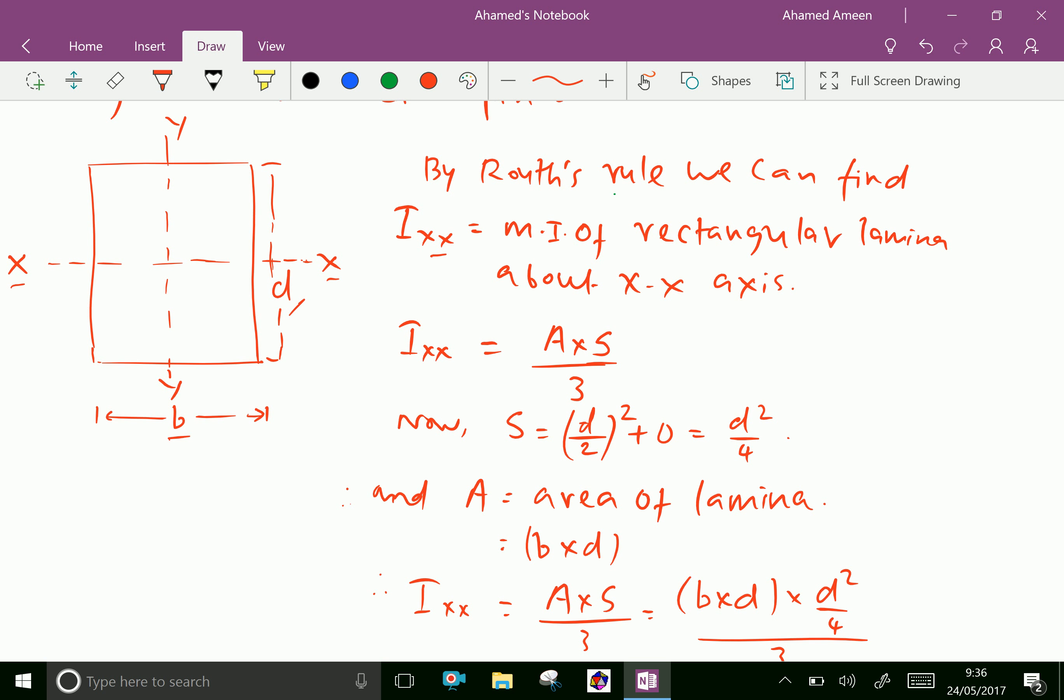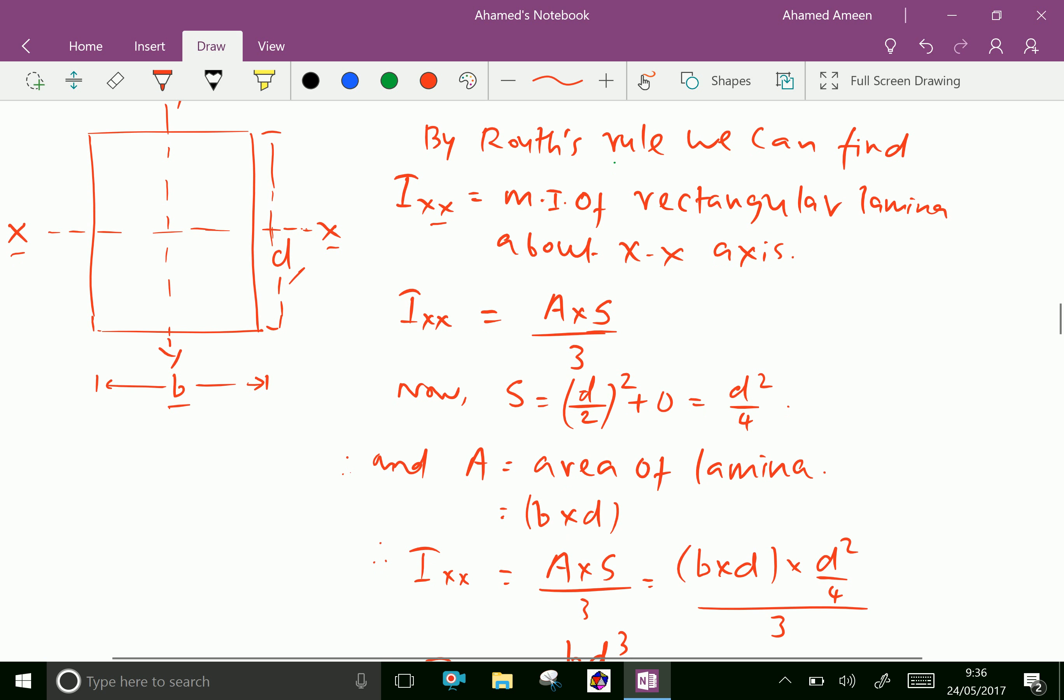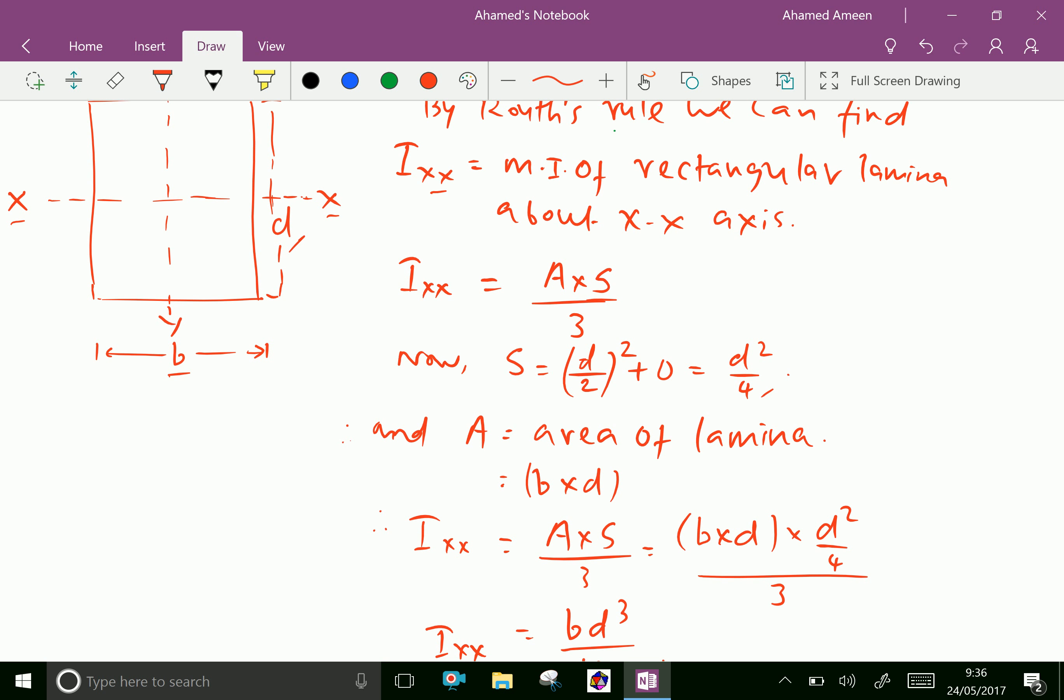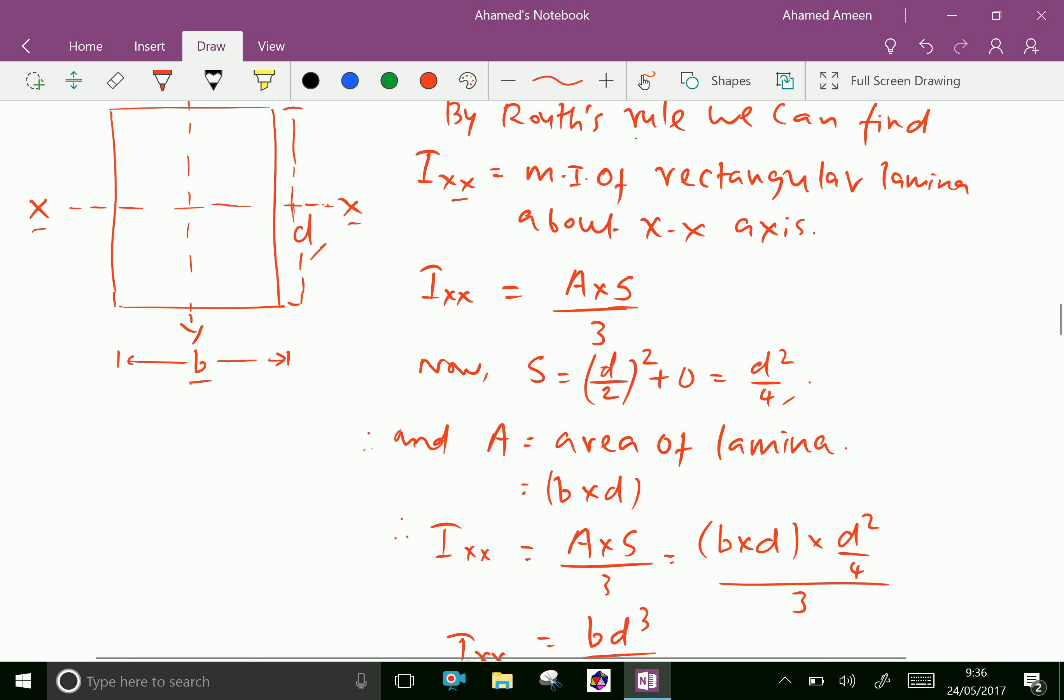Now, Ixx equal A into S over 3 by Ruth's rule, since the lamina is rectangular shape. Now, S equal D over 2, D over 2 means the depth over 2 whole square plus other axis is here 0, consider 0. Therefore, S equal to D squared over 4. And A equal area of the rectangular lamina, that is area of the rectangle is B into D.